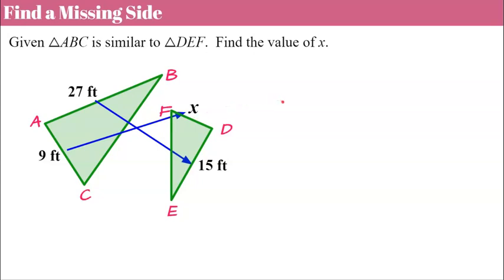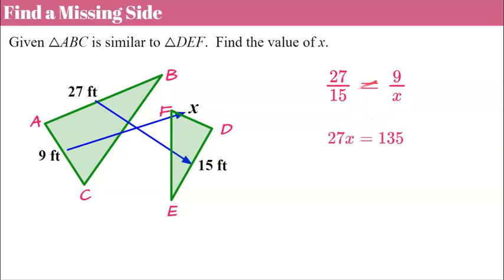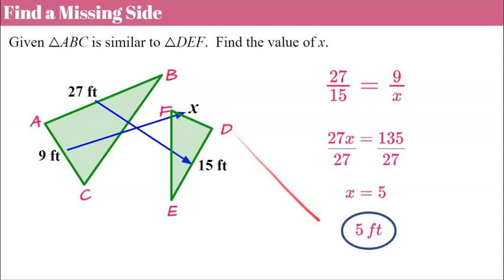Be very careful when setting up your ratios. Here's our proportion: 27 to 15 is the first pair of corresponding sides, and that will be equivalent to 9 to X. Using cross products to solve: 27 times X equals 9 times 15, which is 135. Divide both sides by 27, and X equals 5. Therefore, side DF, that X, is equivalent to 5 feet.